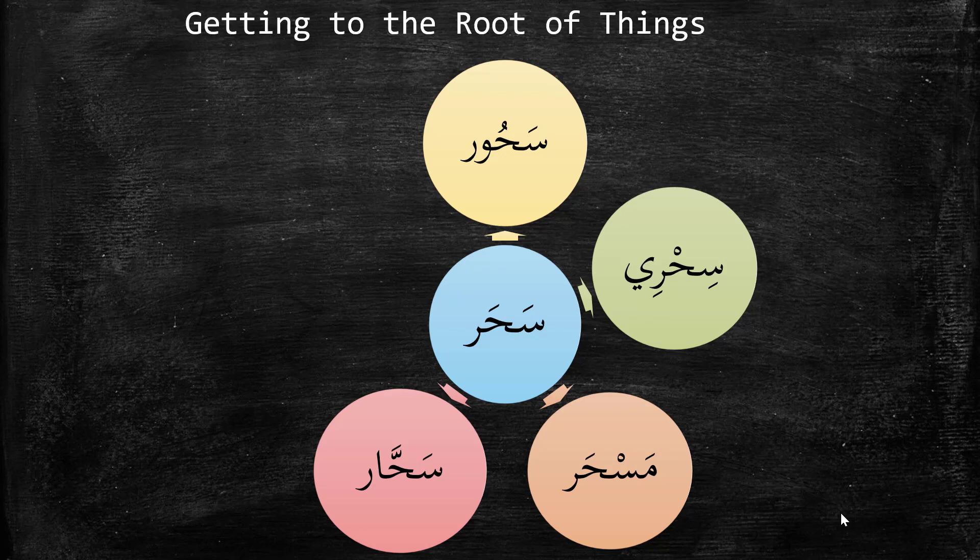The next word is 'Sahar.' We see the addition of an alif after the ha — there's also a shadda on the ha, but the more prominent change is the alif. Sahar, which is on the form faal, usually shows a profession or a job. So Sahar is someone who practices magic or sorcery professionally, or is very skilled at it and has put a lot of time and study into it.